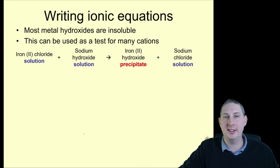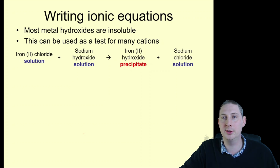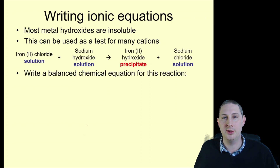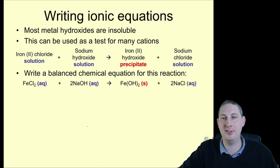A reminder about writing ionic equations. Most metal hydroxides are insoluble — this can be used as a test. For example, iron(II) chloride solution plus sodium hydroxide solution forms iron(II) hydroxide precipitate and sodium chloride solution. The balanced equation is: FeCl₂(aq) + 2NaOH(aq) → Fe(OH)₂(s) + 2NaCl(aq). Pause the video now and try to write the ionic equation.